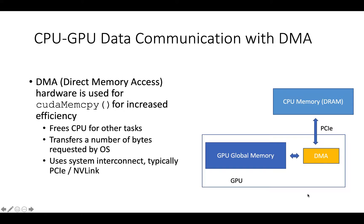Modern computer systems use a specialized hardware mechanism called Direct Memory Access, or DMA in short, to transfer data between an I/O device and the system DRAM. When a program requests an I/O operation, say a reading from a disk drive, the OS makes an arrangement by setting a DMA operation defined by the starting address of the data in the I/O device buffer memory, the starting memory address, the number of bytes to be copied, and the direction of the copy. Using a specialized hardware mechanism to copy data between an I/O device and system DRAM has two major advantages.